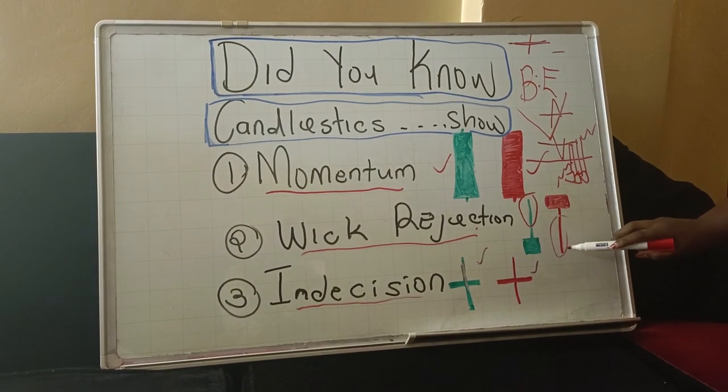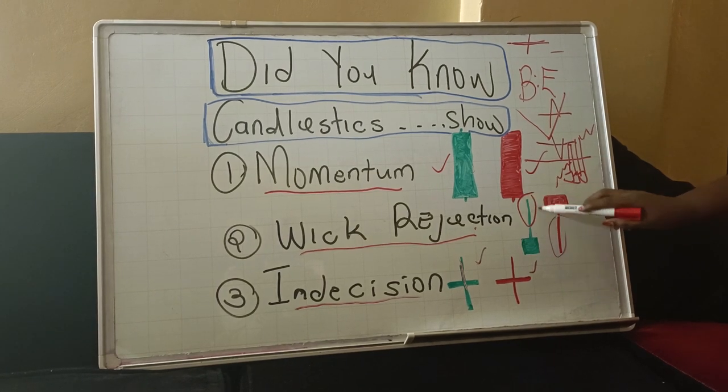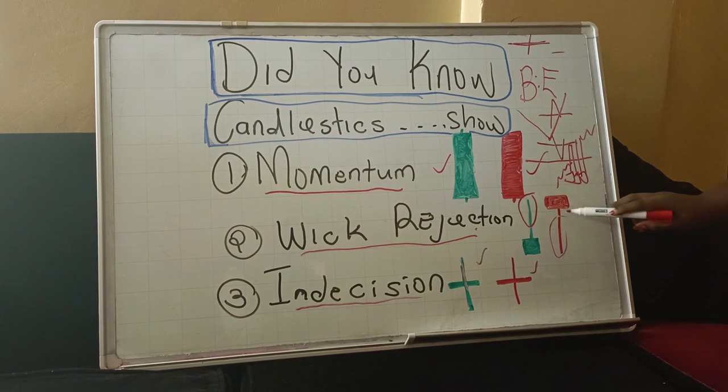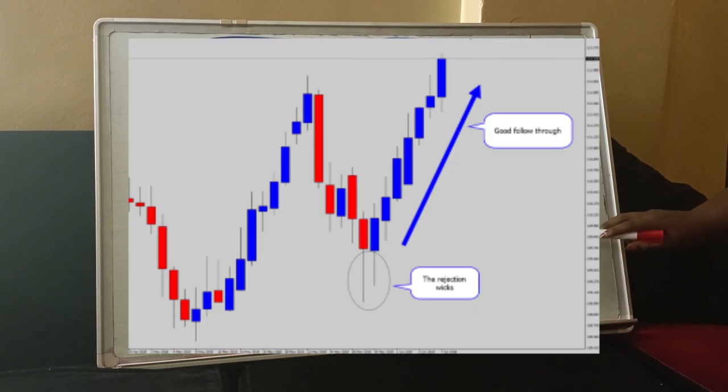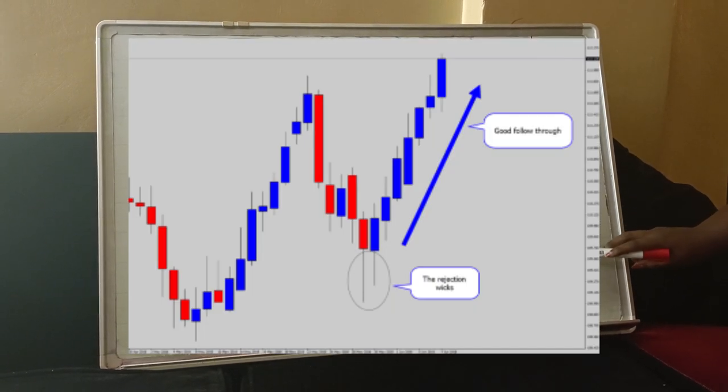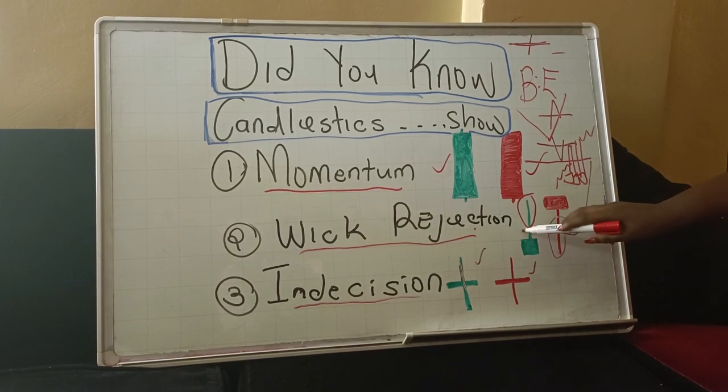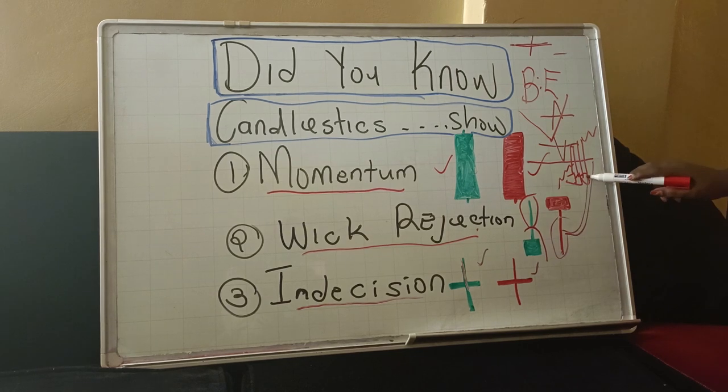There's the green one, there's the red one. If there's a presence of wick on the upper side, it means buyers are getting rejected. If there's a presence of the wick at the downside, sellers are getting rejected. And this market can reverse. This one can reverse and go down. This can reverse and go up.